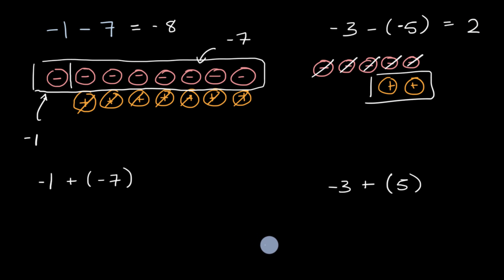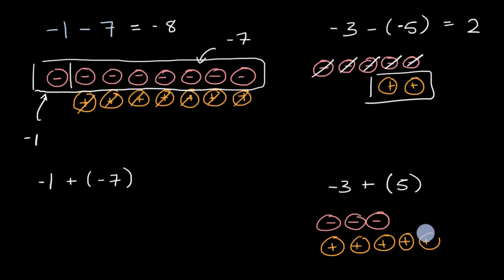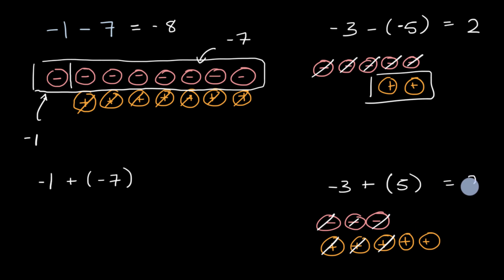Well, that's interesting because that's feeling very similar to what we have here. If we start with negative three — negative one, negative two, negative three — and I add a positive five, so five positive integer chips: one, two, three, four, and five. We already know that those cancel in pairs. This is the equivalent of positive two.